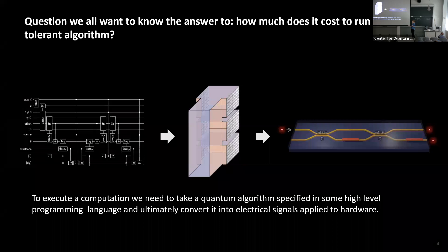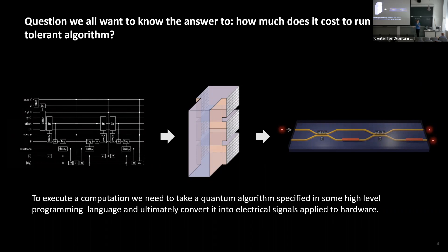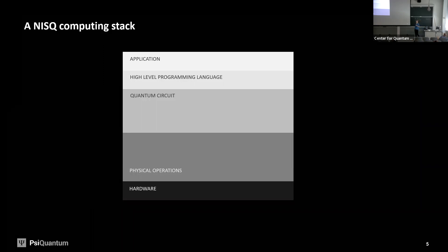That raises the question: how much does it actually cost to take one of these algorithms — written down as an abstract circuit in some high-level programming language — and work out how much it's going to cost to run on hardware? How big a machine is needed and how long will it take? Stepping through from algorithm to fault tolerant gates to hardware is a very complex trajectory requiring many layers and decisions.